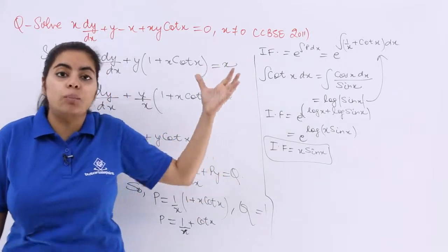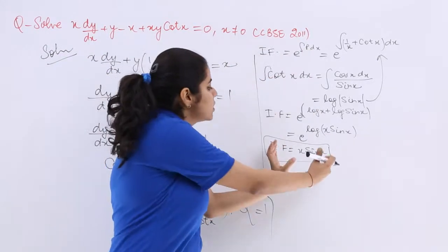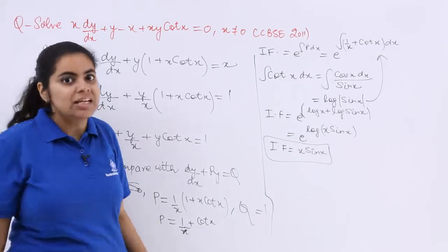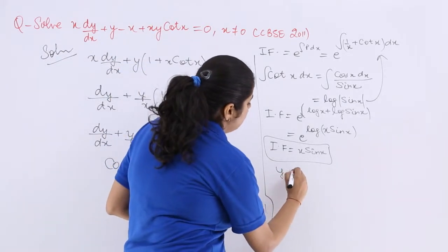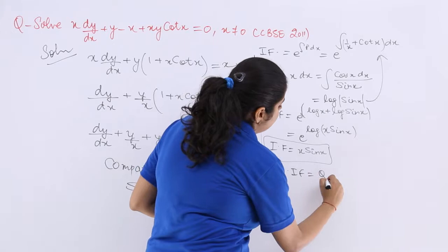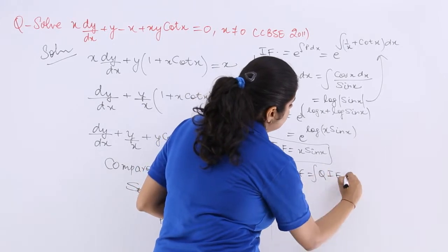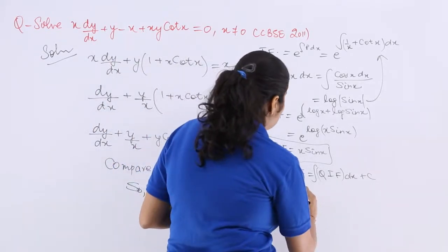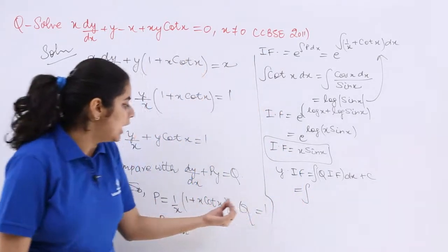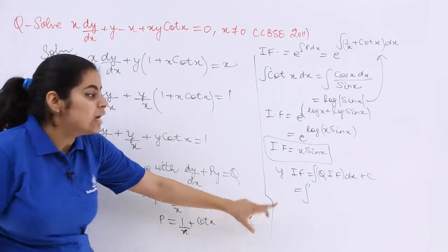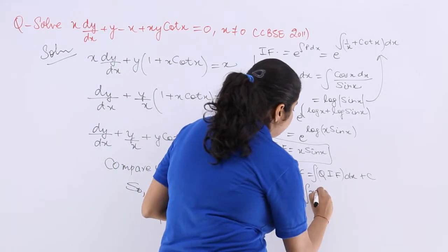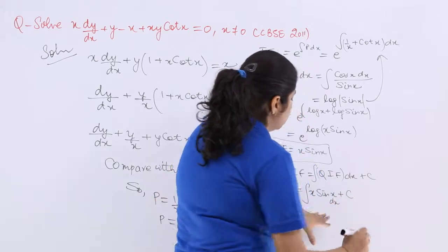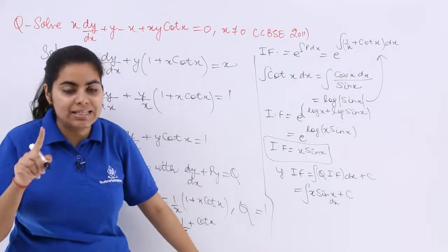Now when you have obtained out of this huge thing just simple integrating factor x sin x, what is left? Simply y into integrating factor is equal to integral of q into integrating factor dx + c is the next step. What is q? q is what we had found out as 1. What is integrating factor? x sin x plus c.